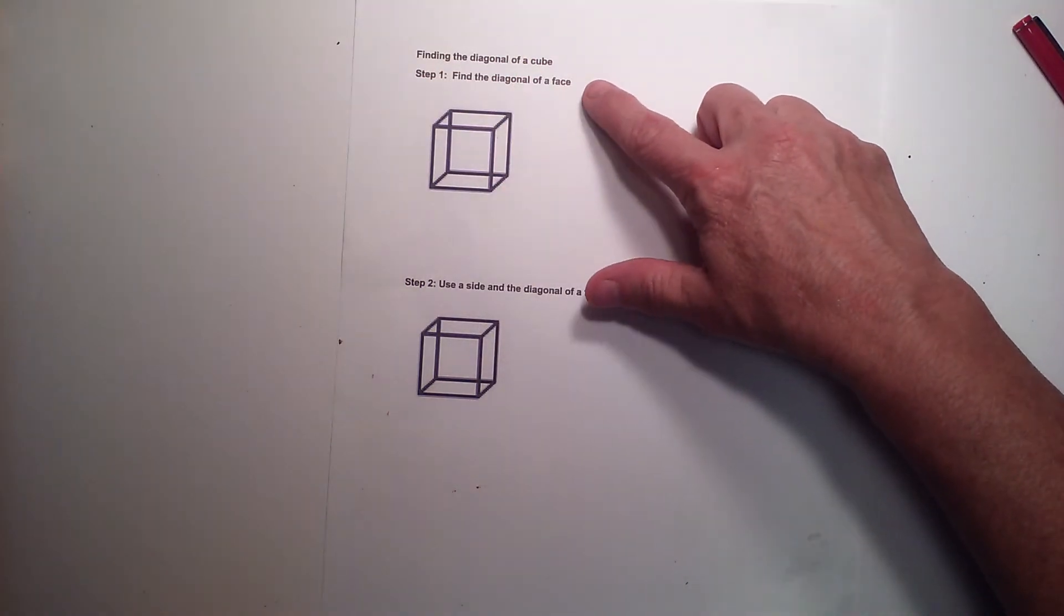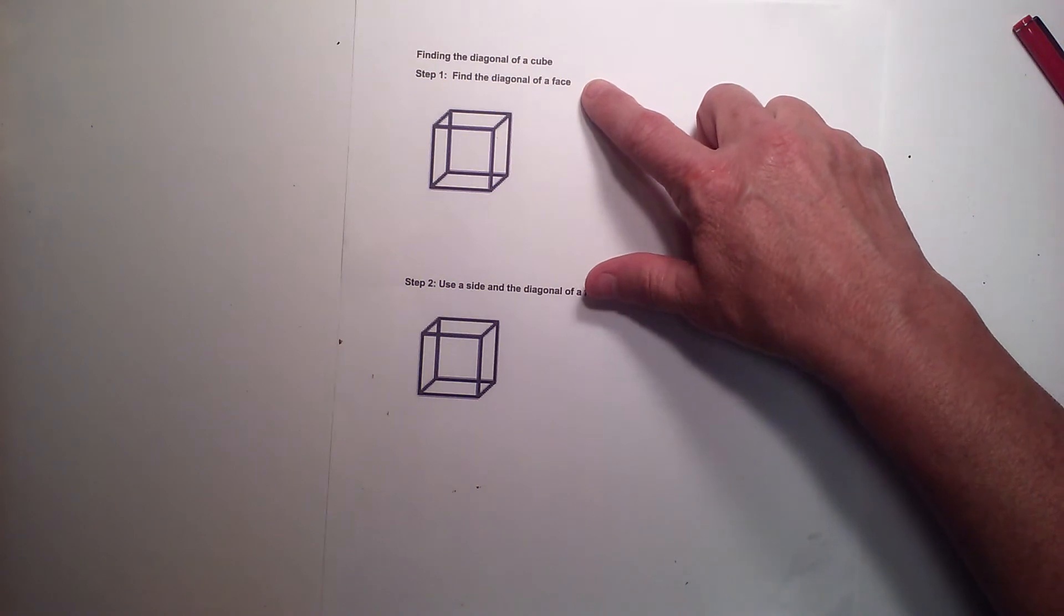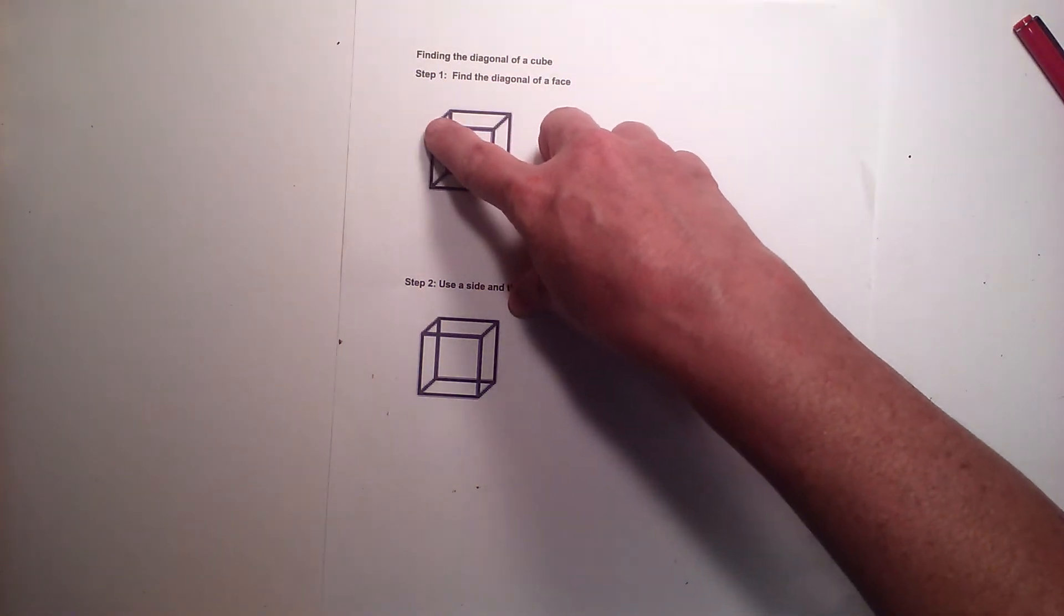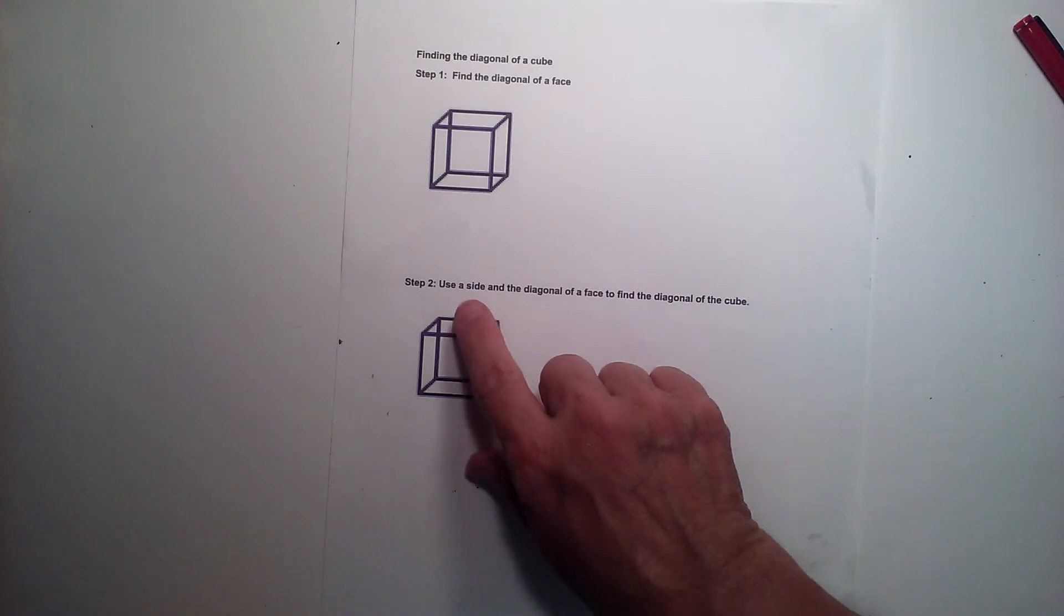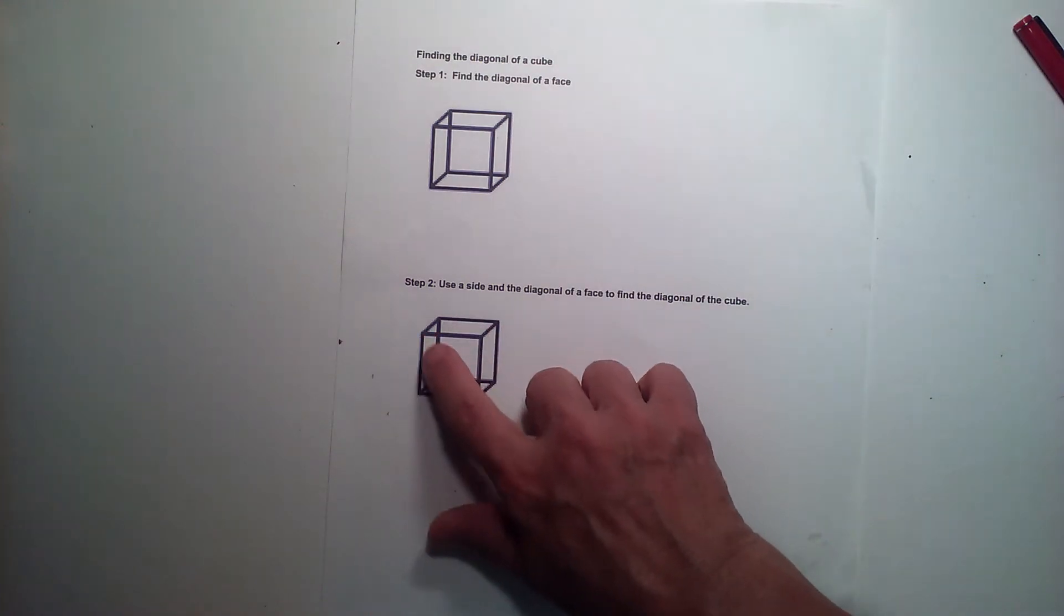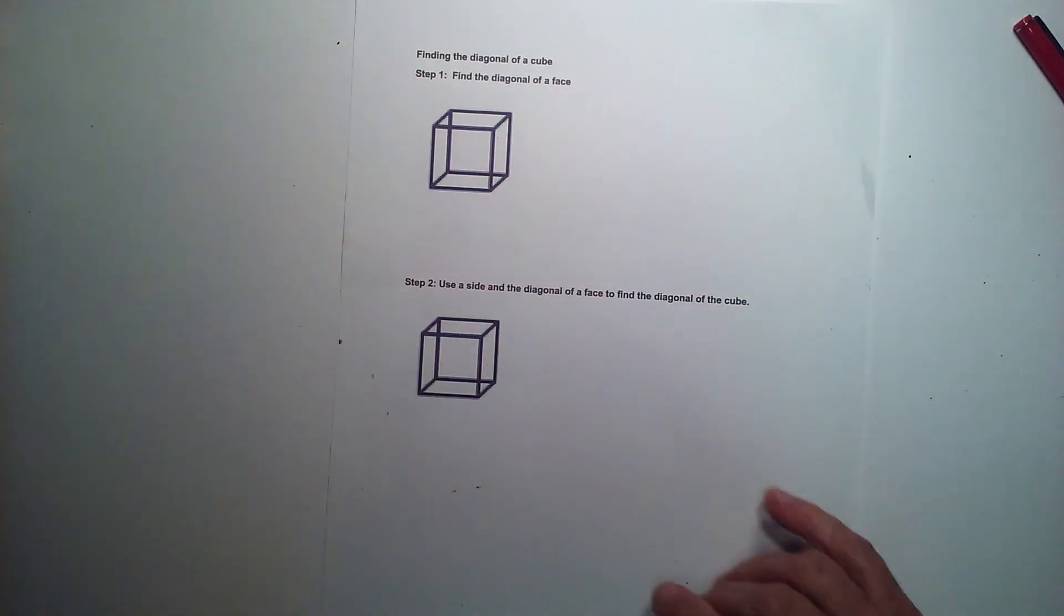It takes two steps. First step is we're going to find the diagonal of one of the faces of the cube, and then we're going to use that and one of the sides to find the diagonal of the cube.